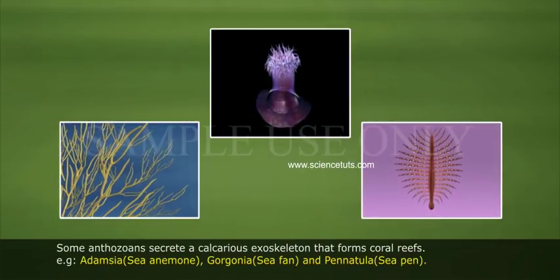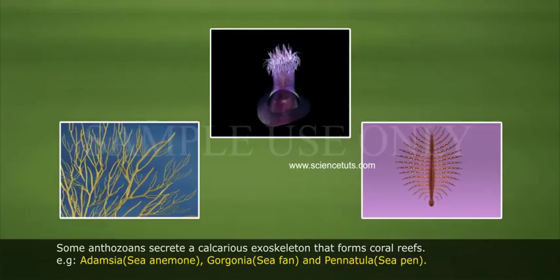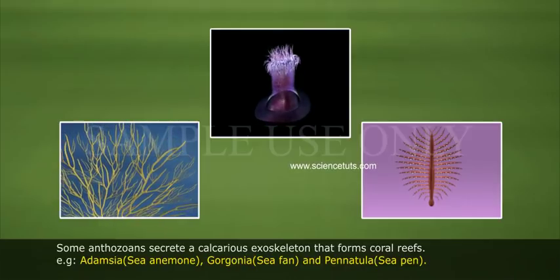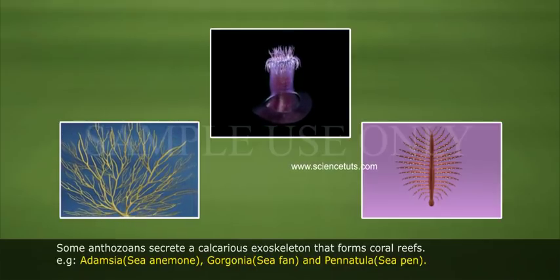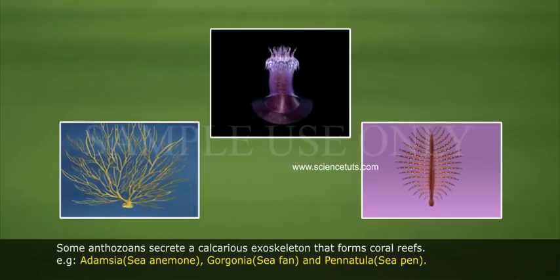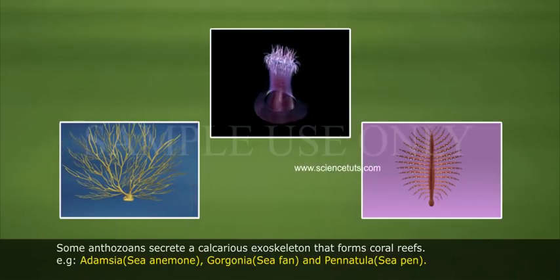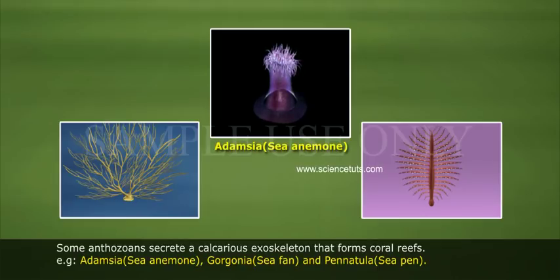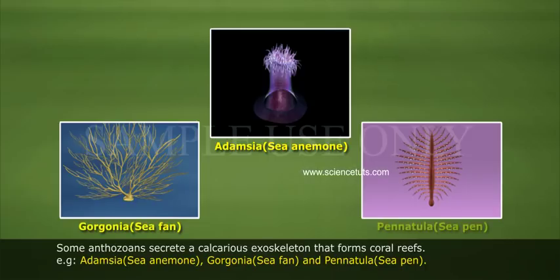Some Anthozoans secrete a calcareous exoskeleton that forms coral reefs. Examples: Adamsia (Sea Anemone), Gorgonia (Sea Fan), and Pennatula (Sea Pen).